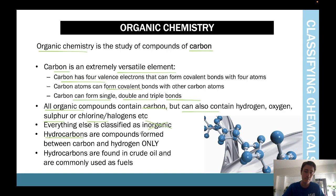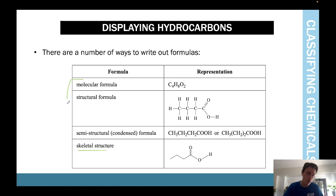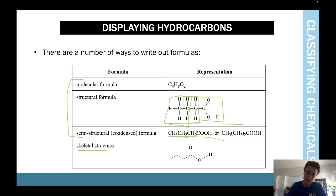Hydrocarbons are compounds formed between carbon and hydrogen only. There are three distinct ways to represent them: the molecular formula, which is just the basic composition; the structural formula, which shows what it looks like; and the semi-structural formula, which represents the molecule without drawing lines — for example, using CH3, CH2, and COH notation.